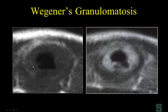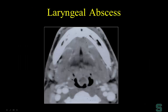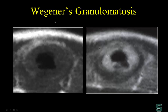Another example: on non-contrast and contrast-enhanced T1-weighted MR, there is excessive, thick enhancement of the subglottis — it should be very thin and fine. The other entity to consider alongside Wegener's is sarcoidosis, which can have the exact same appearance. So when I see this, I think Wegener's-sarcoid. And if the patient is from India or South America, I add tuberculosis. Those are my three considerations when it's not squamous cell carcinoma.